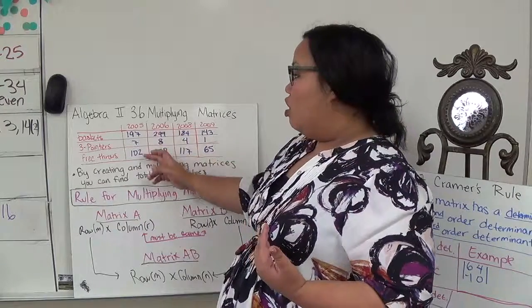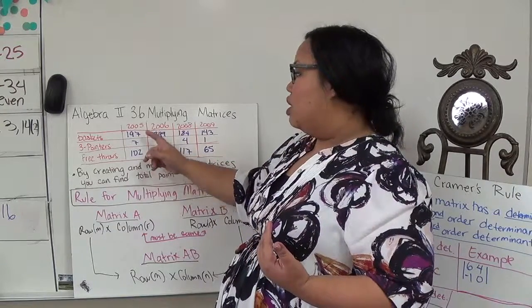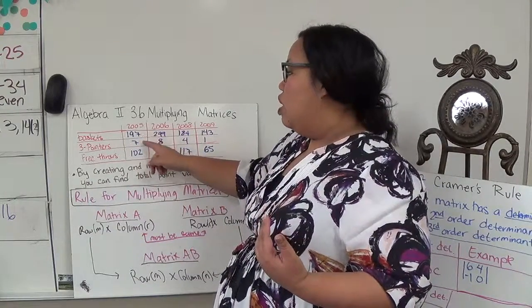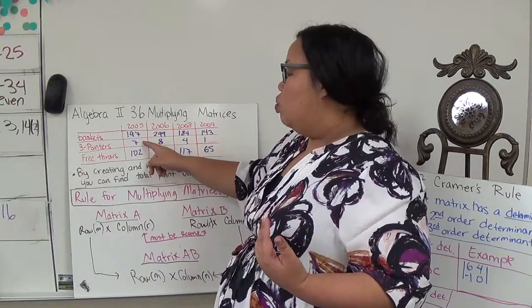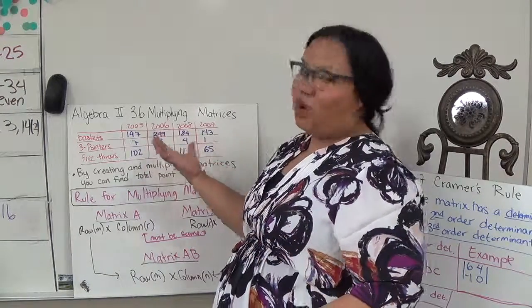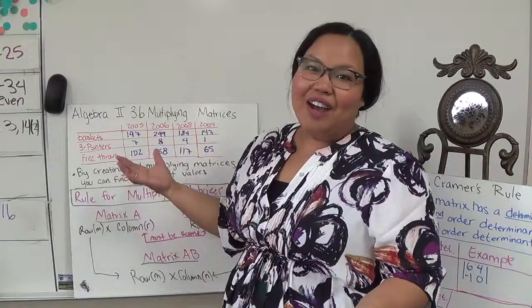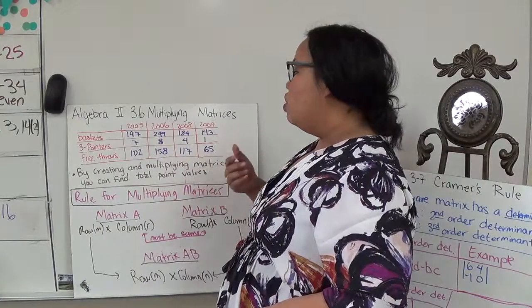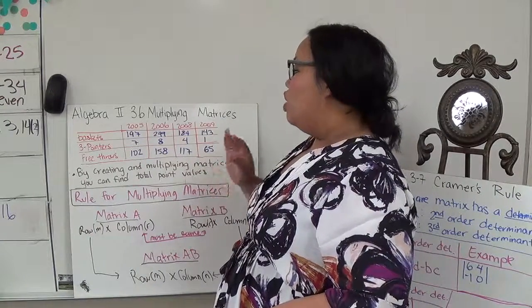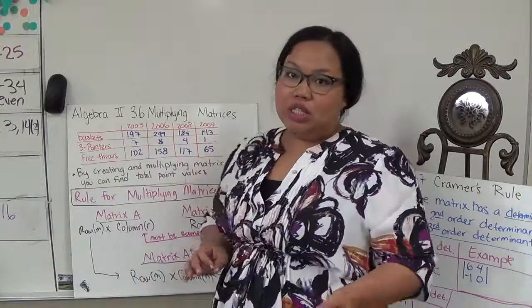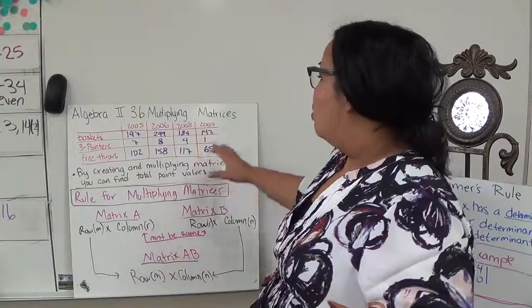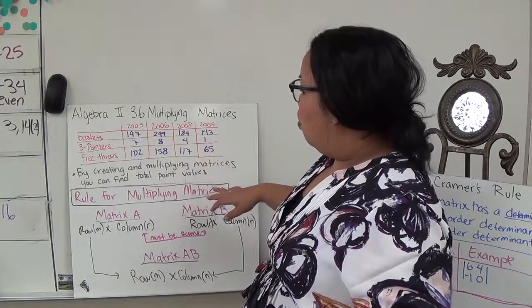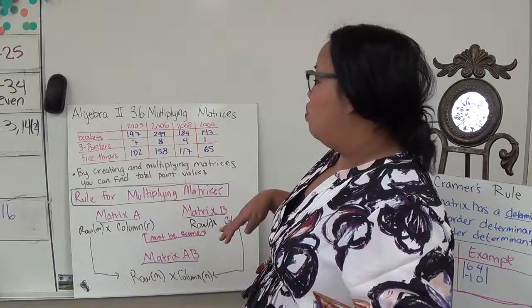I can't just add all of these together because each one is worth different. For example, a basket is worth two points, a three-pointer is worth three points, and a free throw is worth one point.